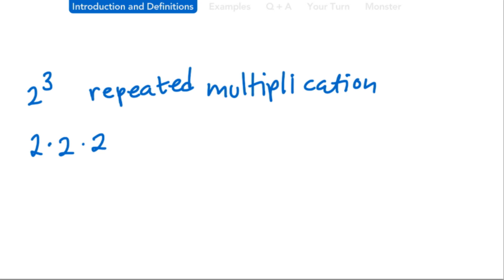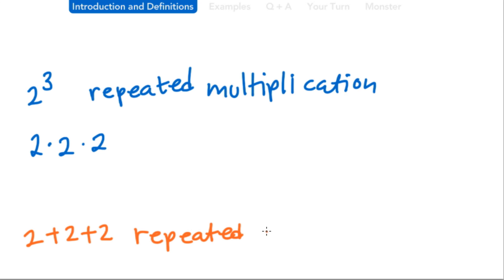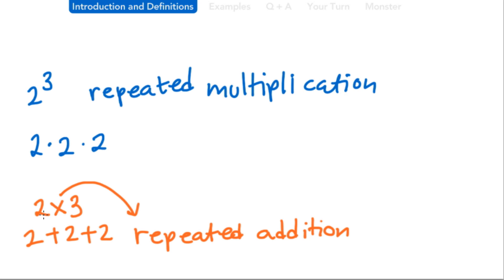Something we don't often think about: if we were adding 2 — 2 plus 2 plus 2 — this is repeated addition. This has nothing to do with exponents, but 2 plus 2 plus 2 is the same as 2 times 3. Multiplication is repeated addition — the multiply sign means you're repeatedly adding the first number by itself 3 times. Similarly, 2 to the third power means you're repeatedly multiplying the first number by itself 3 times. That's an interesting comparison between the two.